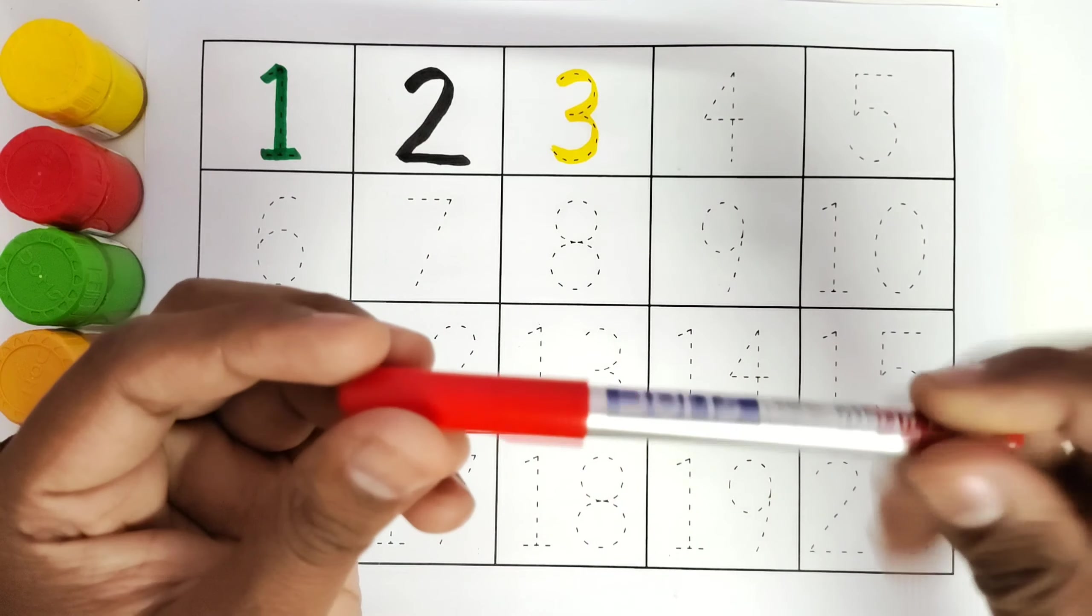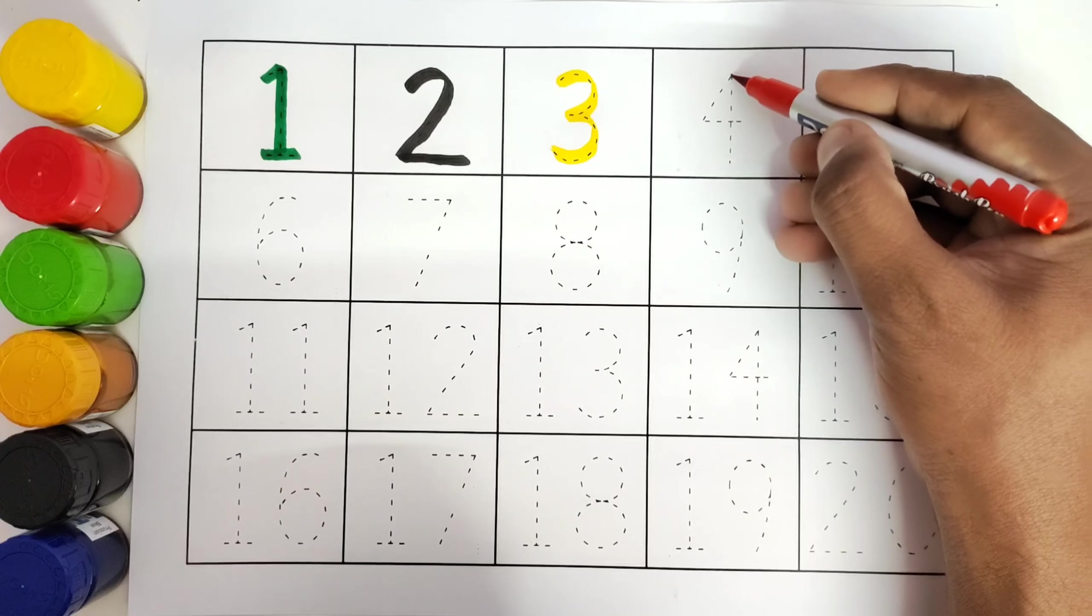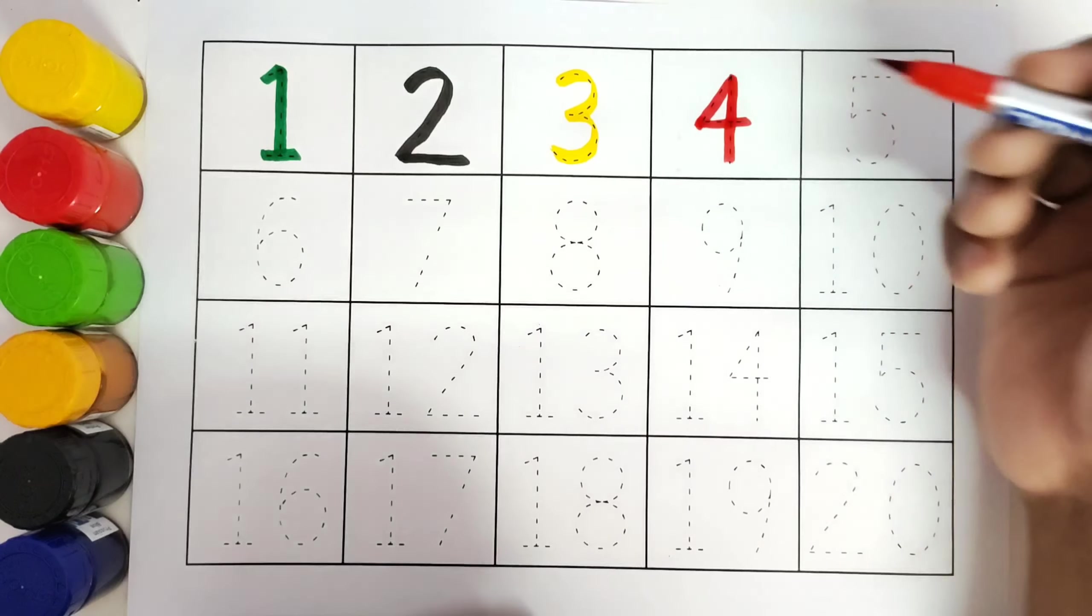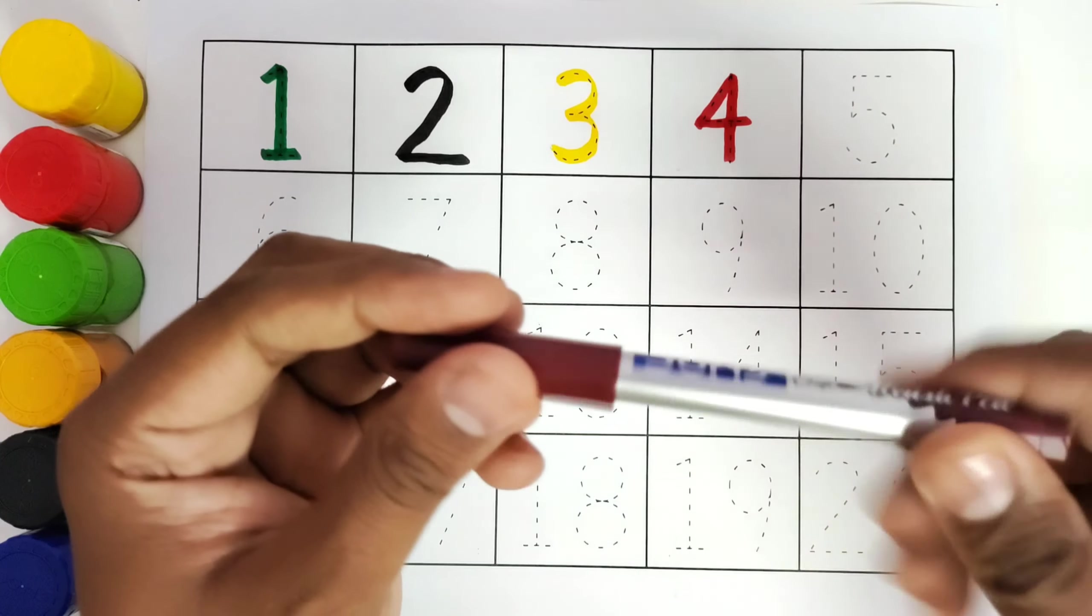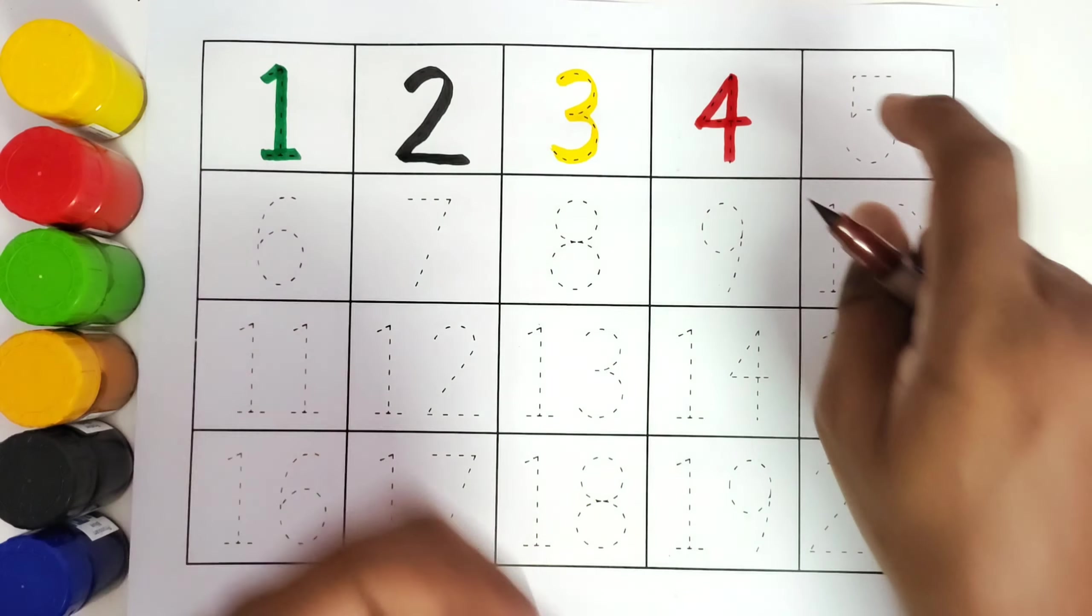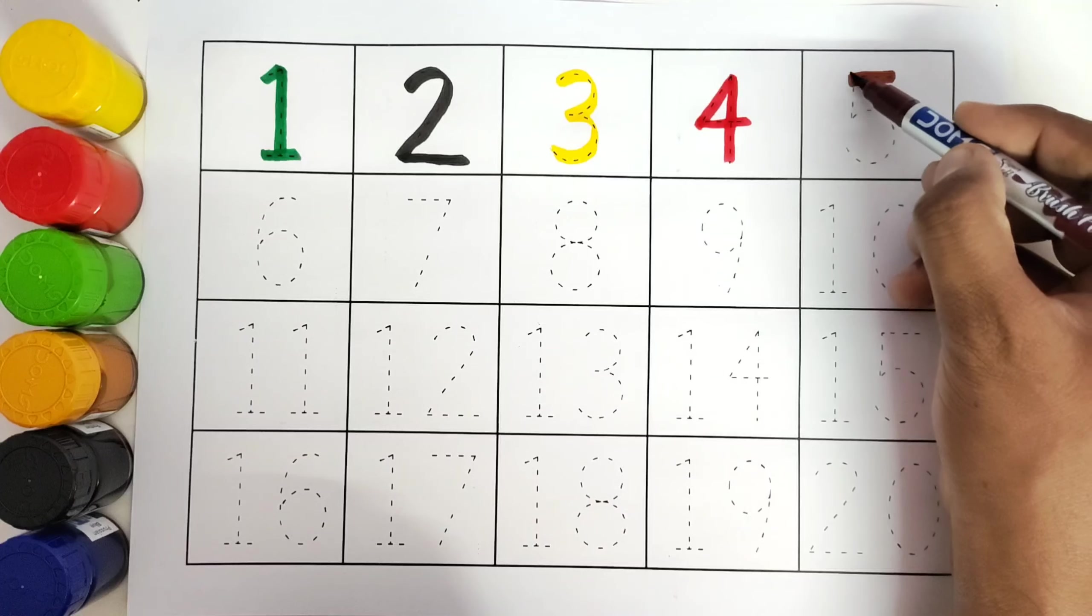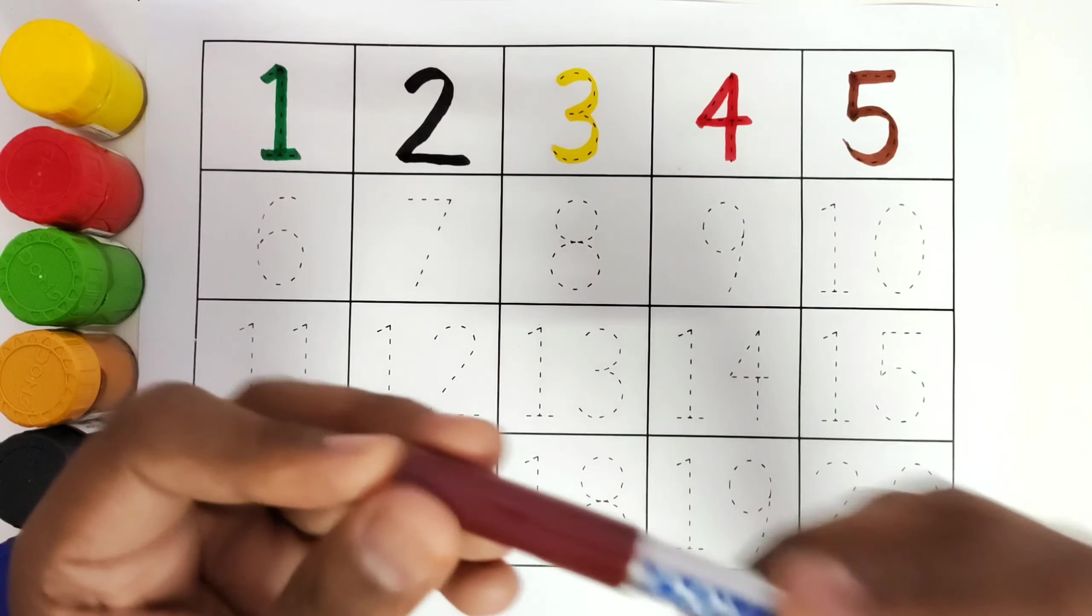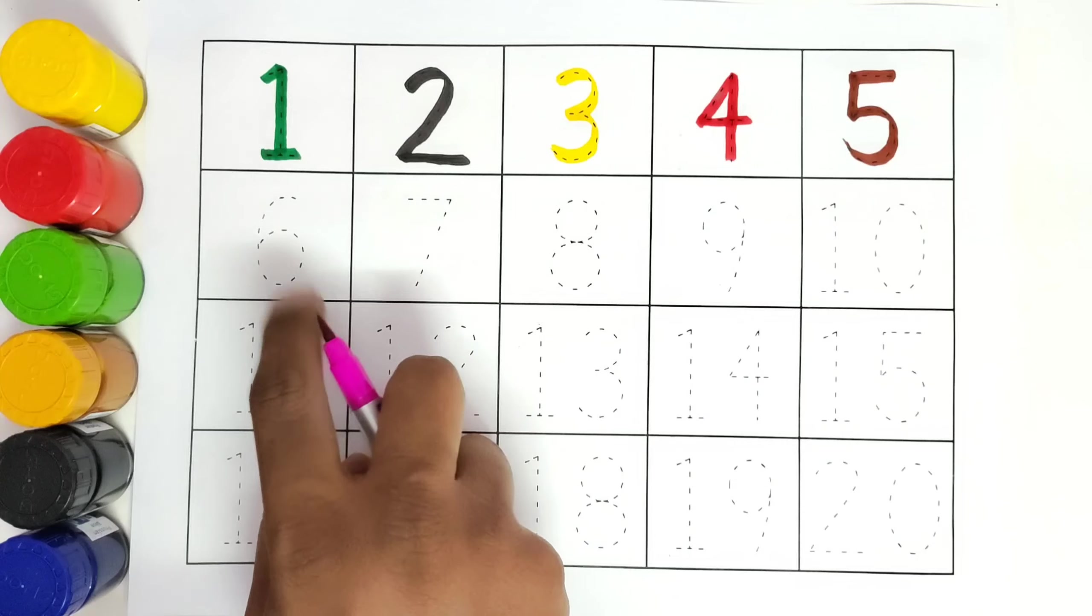This is red colour, number 4. We will trace the number 4. This is brown colour, number 5. This is pink colour, number 6.